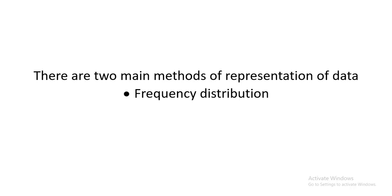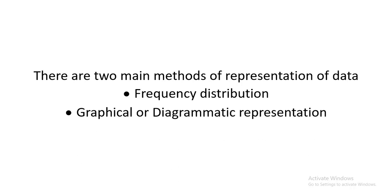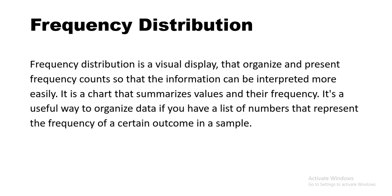There are two main methods of representing data: the frequency distribution method and graphical or diagrammatic representation. Frequency distribution is a visual display that organizes and presents frequency counts — with each observation, there is a corresponding number showing how many times it appears. It is represented in a chart or table form.